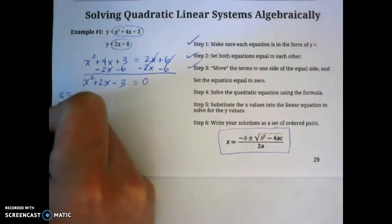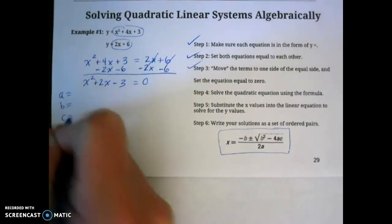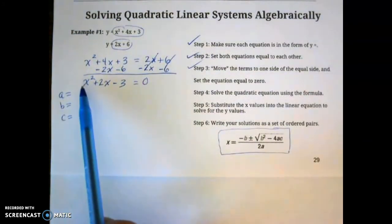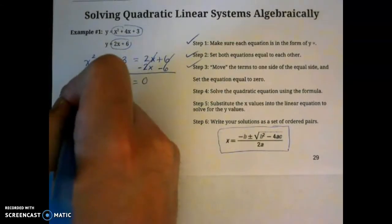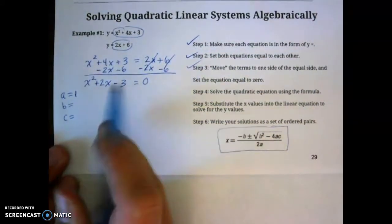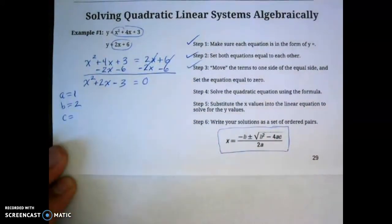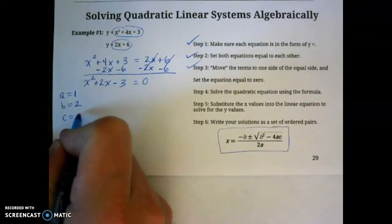This is going to be given to you on your reference sheet. But before I can actually substitute, I'm going to have to identify what my a is, my b, and my c. Just remember your a is the number in front of x squared, so there's really a 1 there. b is the number in front of x, which would be 2. c is the number or constant, would be negative 3.